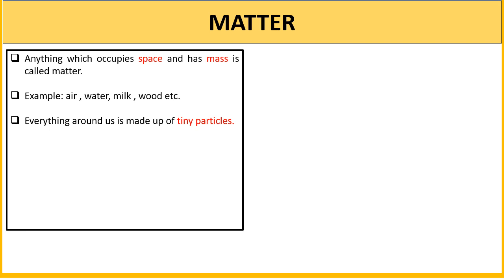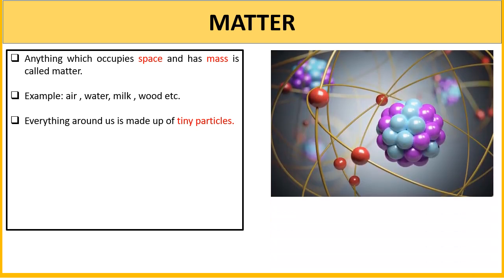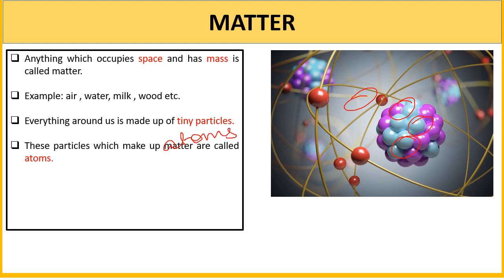Everything around us is made up of tiny particles, and this matter is made up of tiny particles. These tiny particles cannot be seen by the naked eye, and these particles are called atoms. Atoms are made from even smaller particles, and these atoms are constantly in motion.